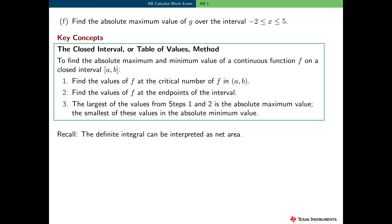Here are some key concepts we'll need to answer this question. First, we'll need the closed interval method, also commonly referred to as the candidate's test. This tells us how to find the maximum and minimum value for a continuous function on a closed interval a to b. We need both conditions — continuity and a closed interval — for this method to work. We find the values of f at the critical numbers in the open interval a to b, and at the endpoints x equal a and x equal b, then create a table of all these values.